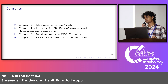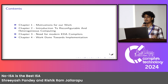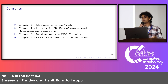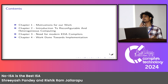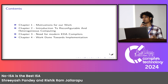This talk has been divided into 4 chapters. Chapter 1, we try to explain what the problems are, according to us, with modern compute. Chapters 2 and 3 are ideas for solutions. And chapter 4 is what we have done so far to solve this.